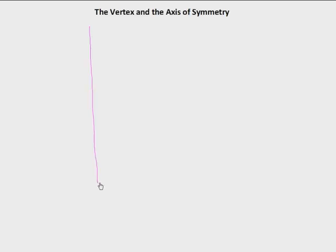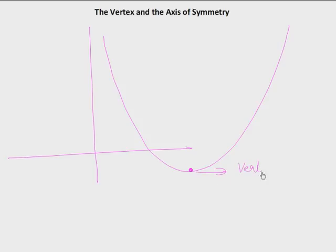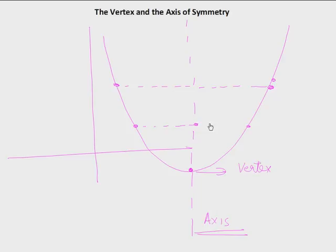Let's look at a typical parabola and understand some features. The important point is called the vertex — it's the lowest point on the graph. The line which goes through the vertex and is parallel to the y-axis is called the axis of symmetry. If you take any point on the graph and reflect it in this axis, you get another point on the other side. This axis divides the graph into two symmetric halves. The two key concepts in the study of parabolas are the vertex and the axis of symmetry.